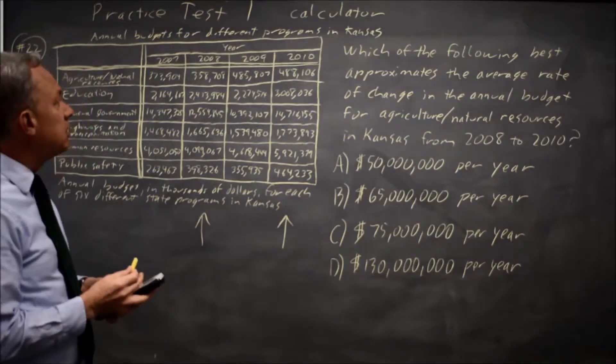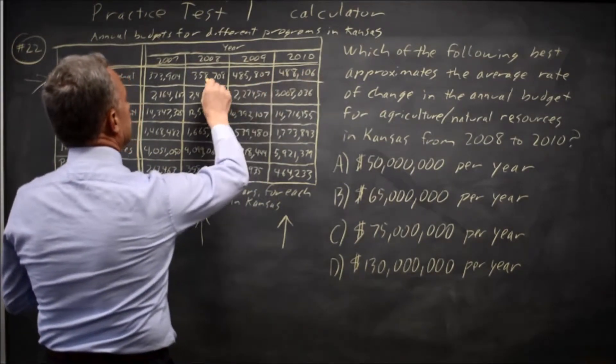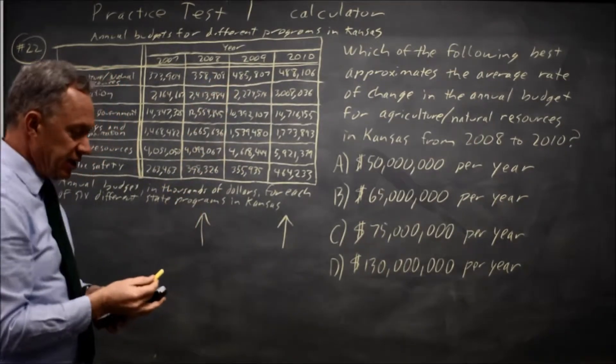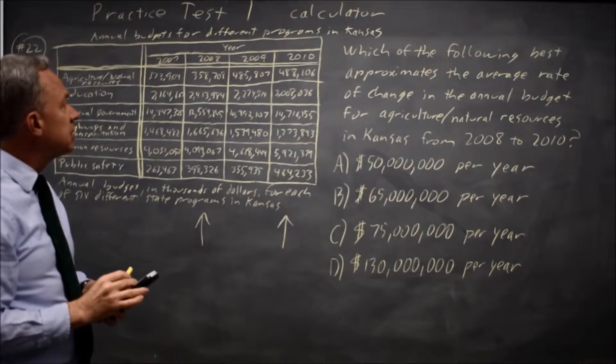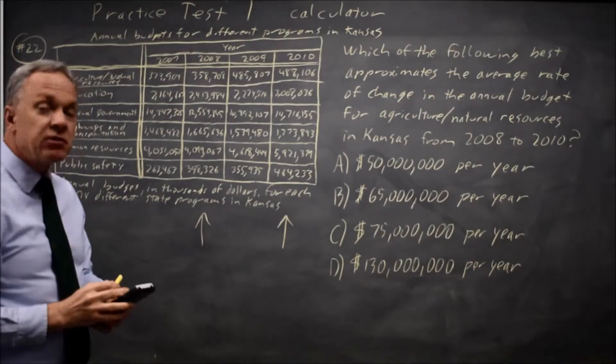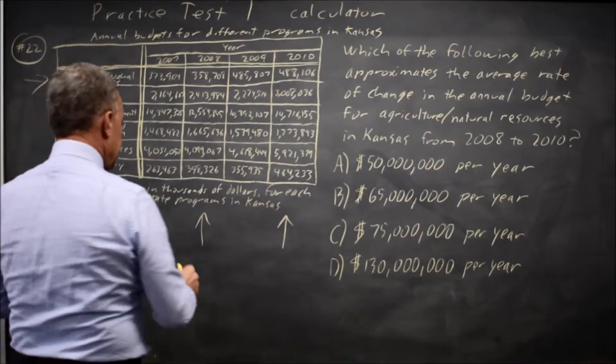and 2008 which is 488,106 minus 358,708 and I get 129,398. But that's over two years and they want an annual rate, so I divide that by two and I get change